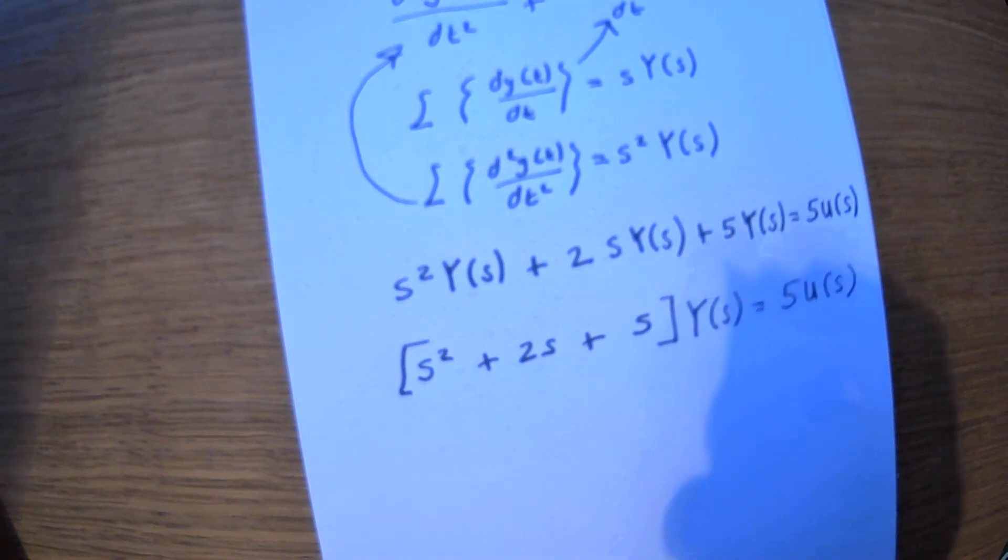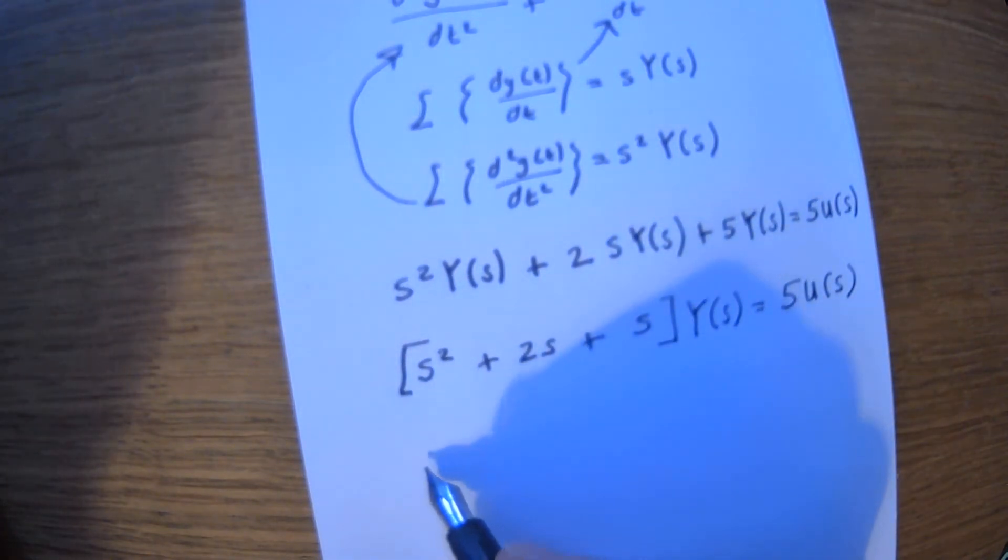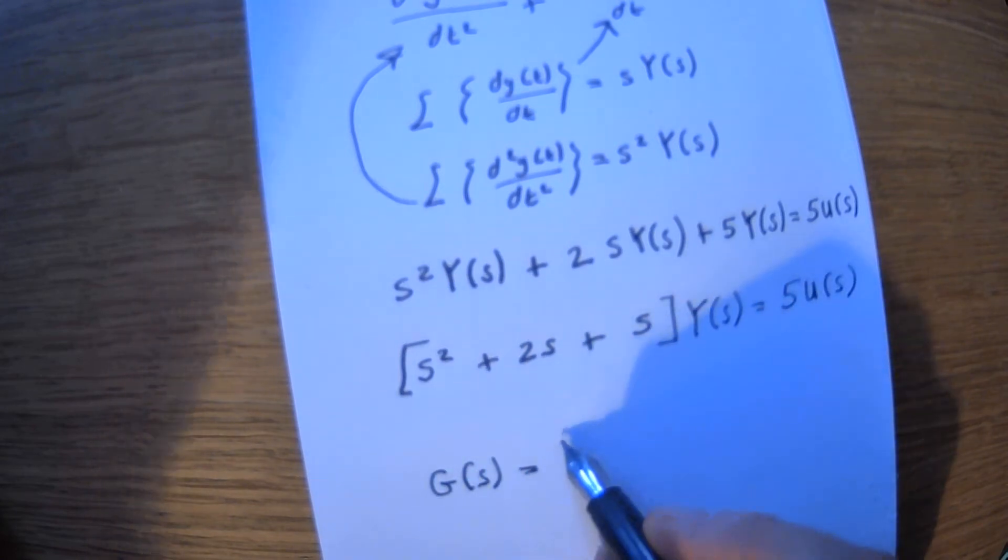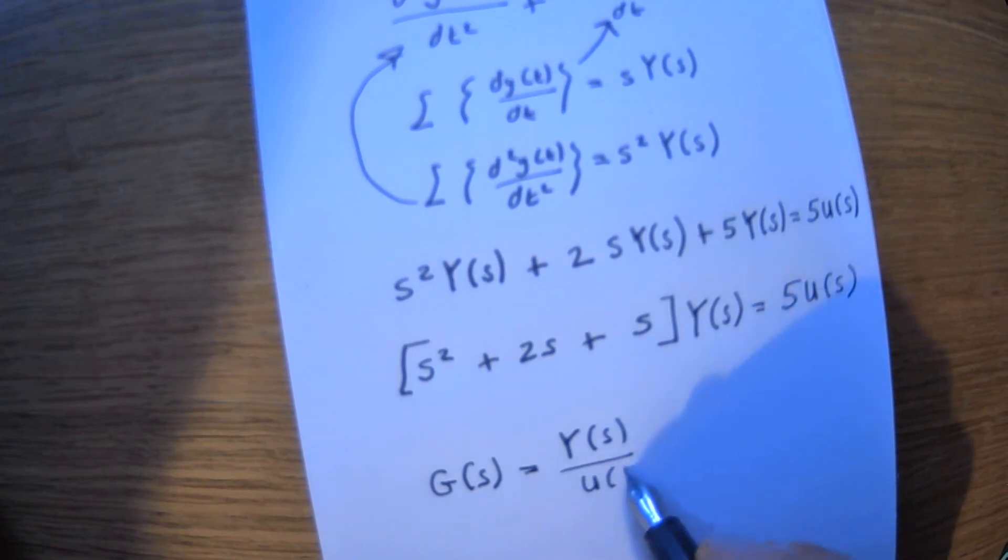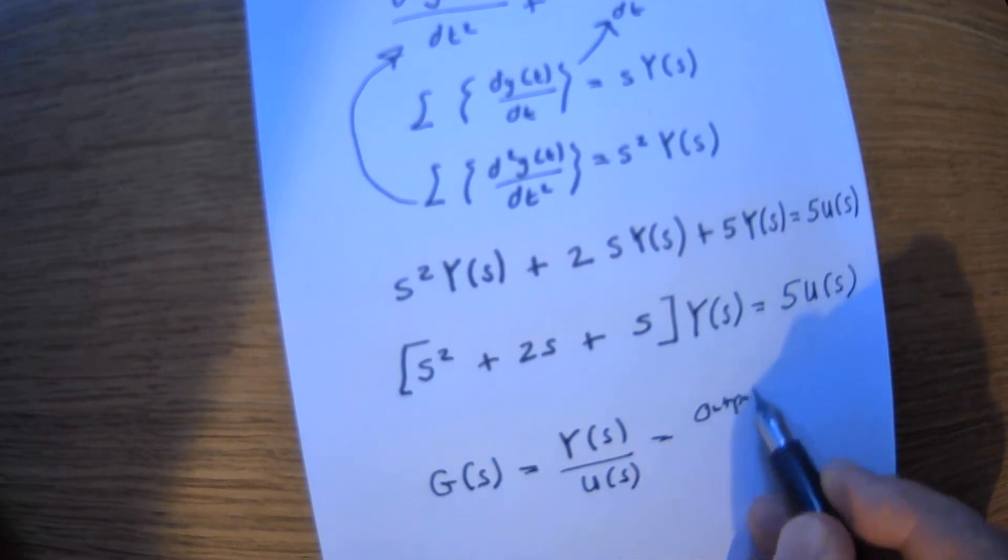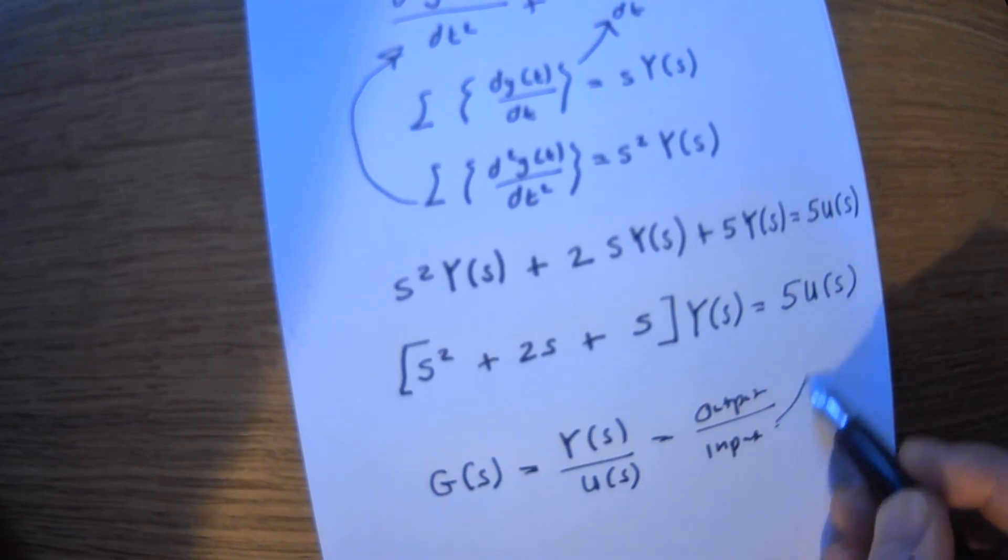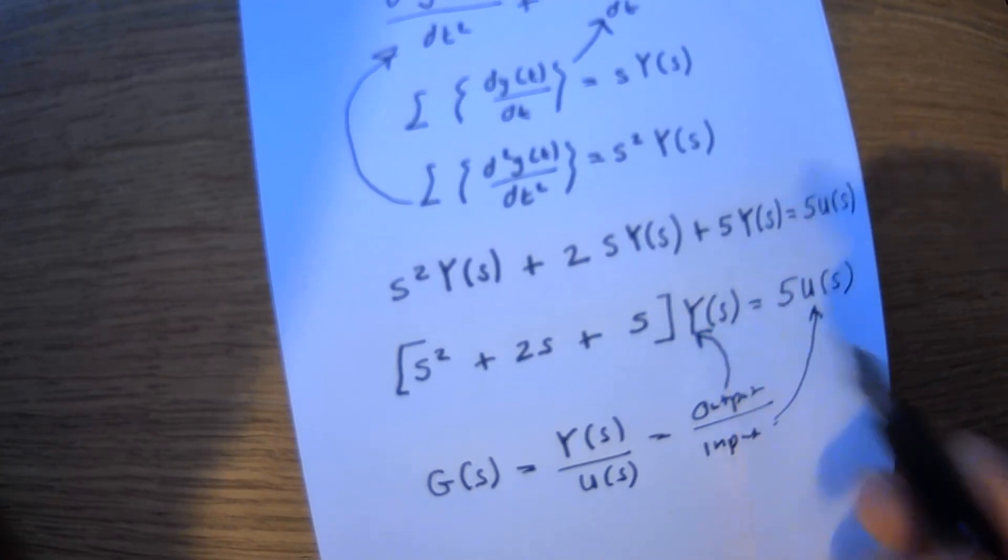Okay, then if you remember, we want it to be in the following form. So for transfer function form, if we just use G of s, the overall transfer function is Y of s over U of s, which is effectively just output over input, where obviously if you recall the notation, the input is U and the output is Y.